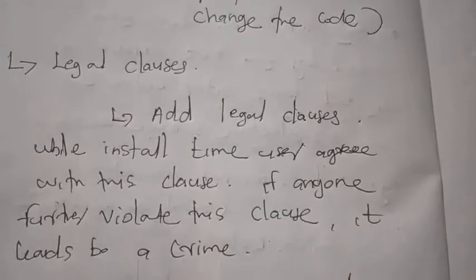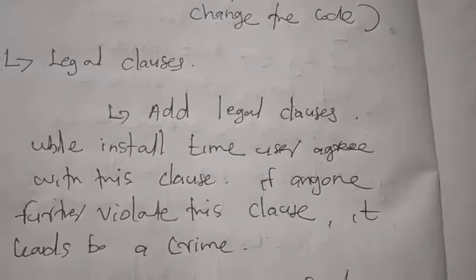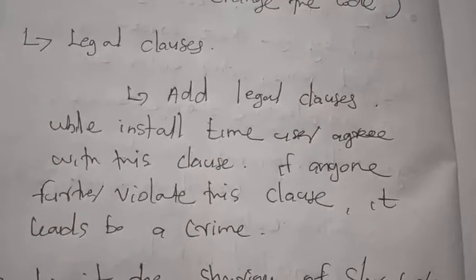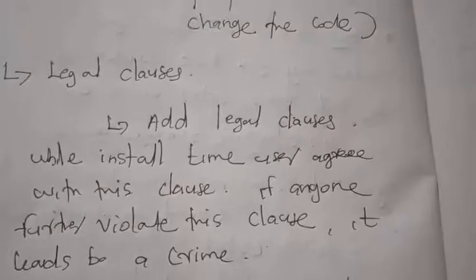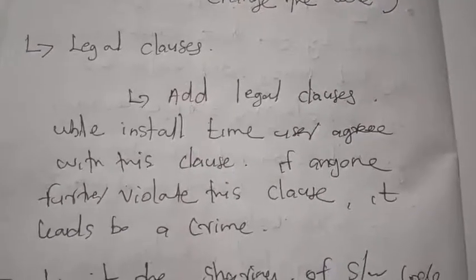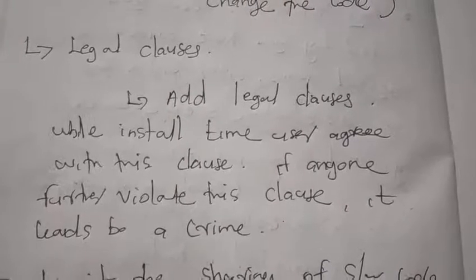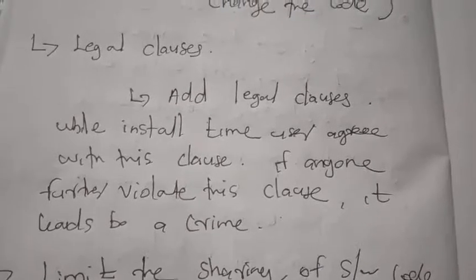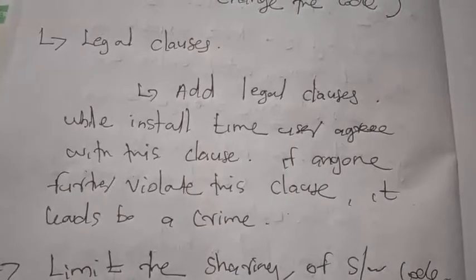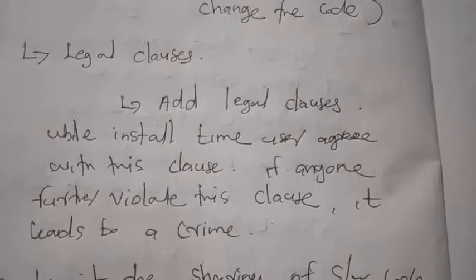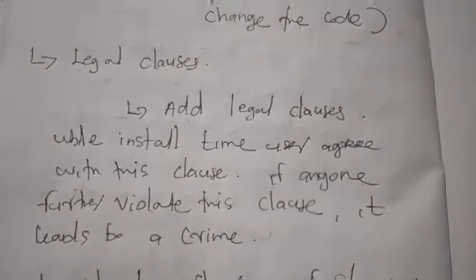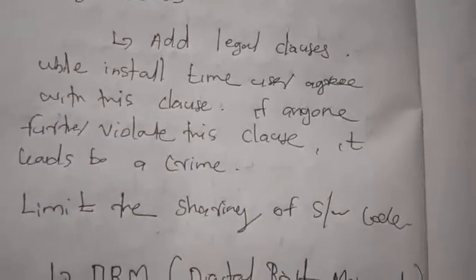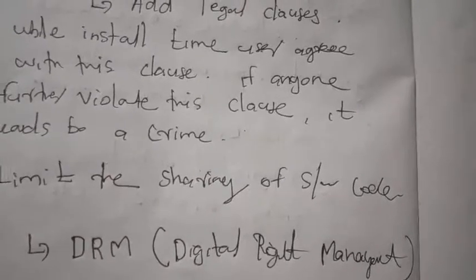The second protection method is adding a legal clause. A legal clause means you add certain legal terms when installing software. All users must read and agree to that clause before they can install the software. After installation, if anyone violates that clause — if anybody tries to take anything from your software — it leads to a crime. By adding a legal clause you can protect your digital property.